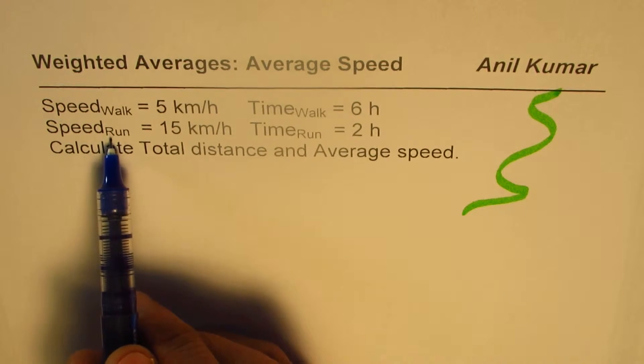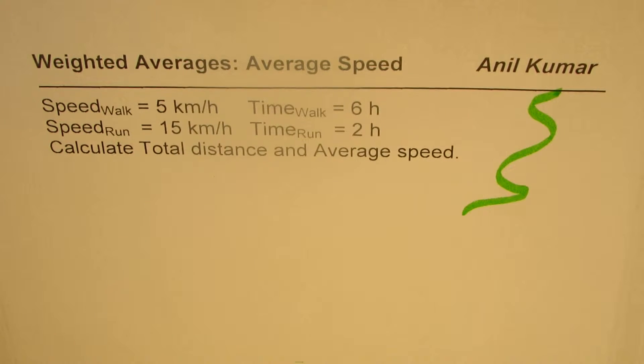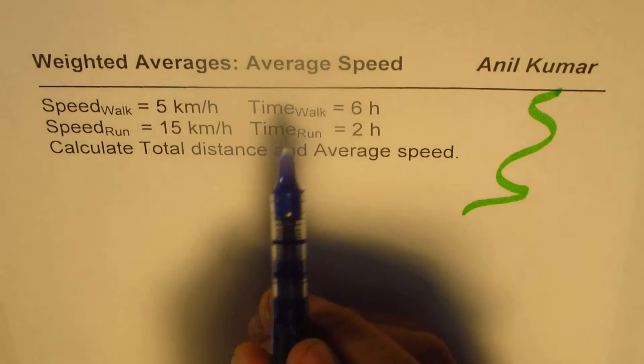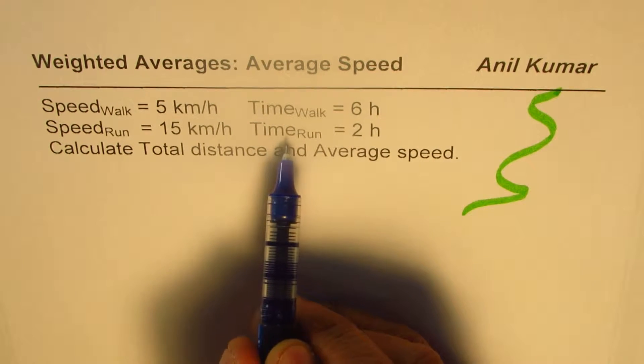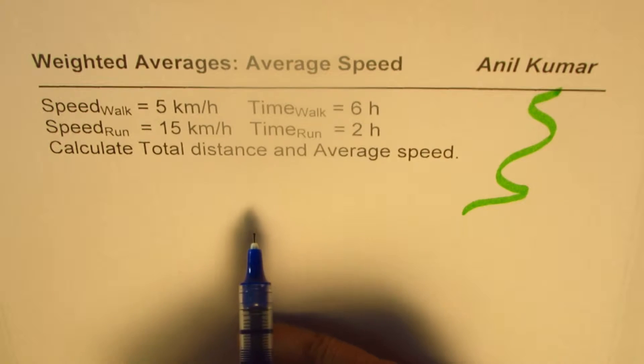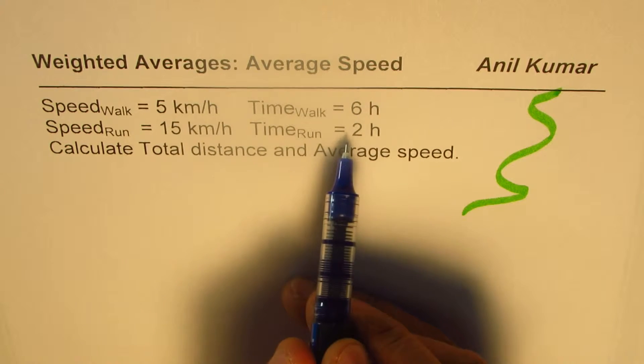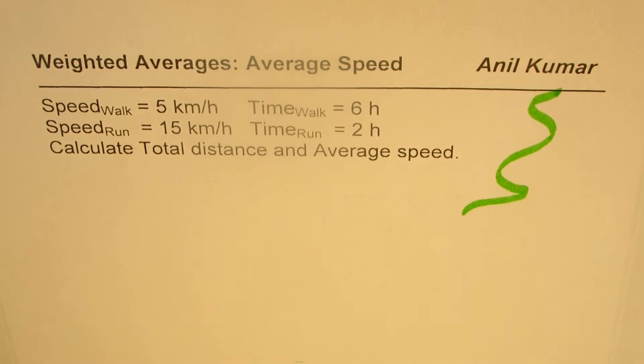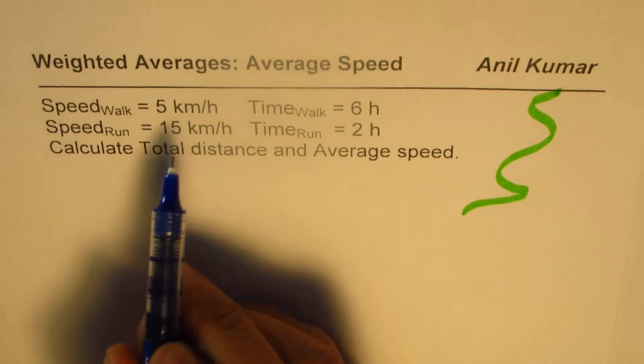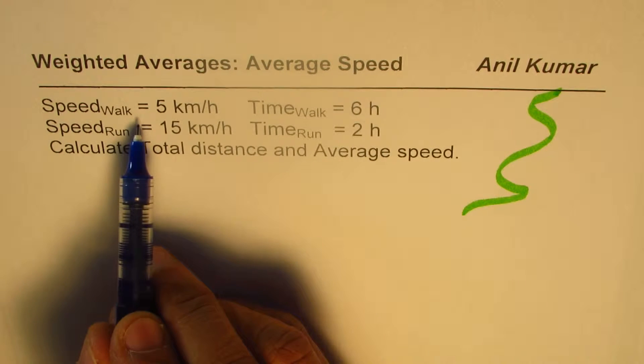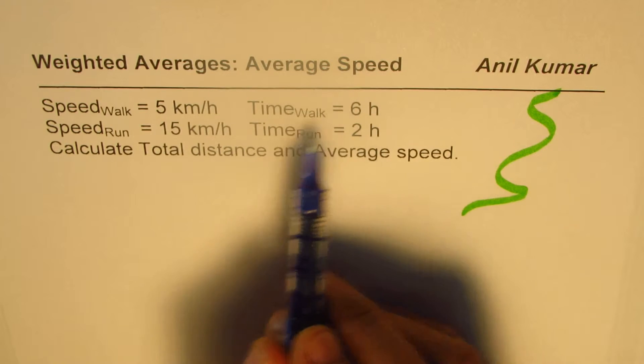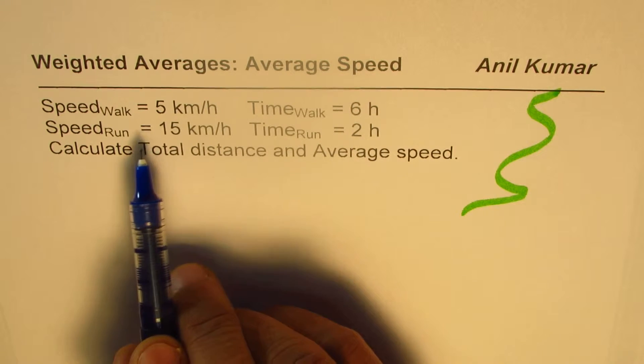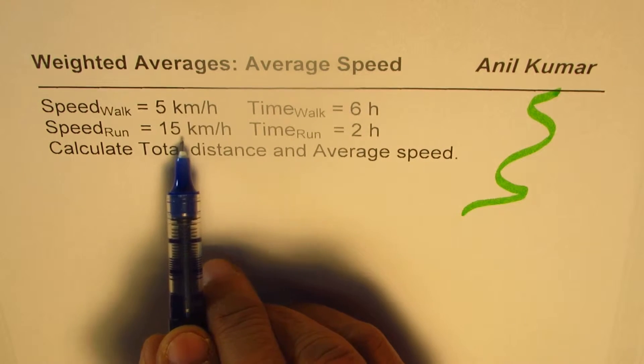During this morning exercise, the person walks at an average speed of 5 kilometers per hour and runs at an average speed of 15 kilometers per hour. Let us assume that total walking time is 6 hours and total time the person runs is 2 hours. Given all this, you need to calculate the distance and the average speed.